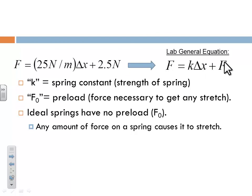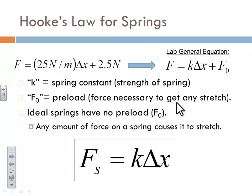Well, if there's no preload value, this plus F0 is not there. And so the equation that we're going to use is going to be this, just minus the F0. So this equation is known as Hooke's Law, and it's basically the force of tension inside of a spring, so F sub S, is equal to the spring constant, which is the strength in newtons per meter, times the stretch.